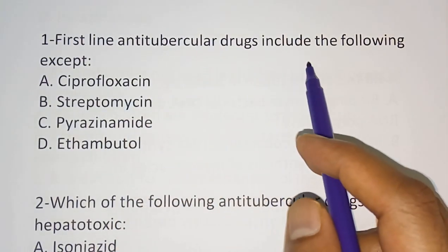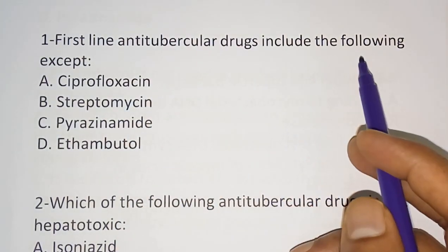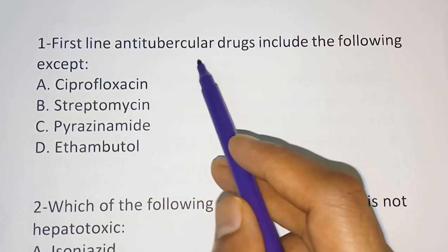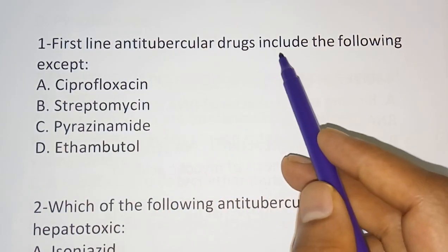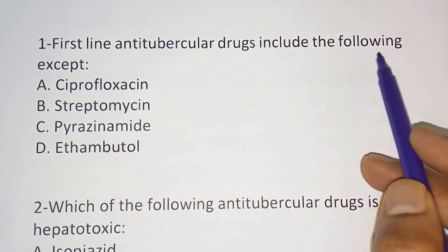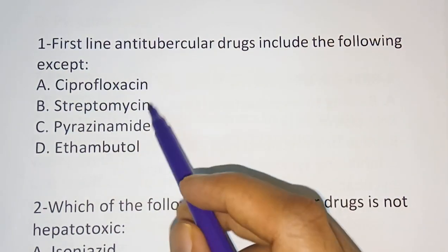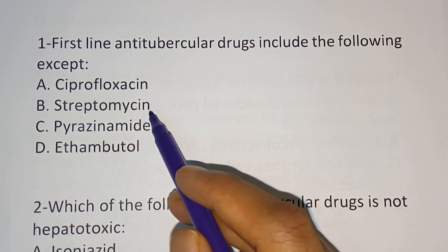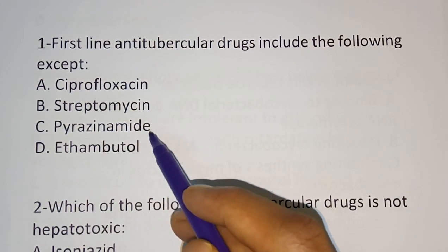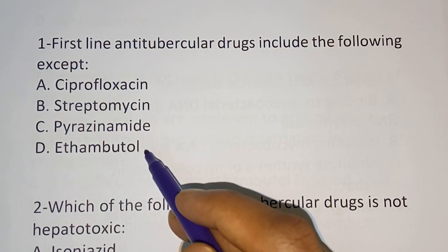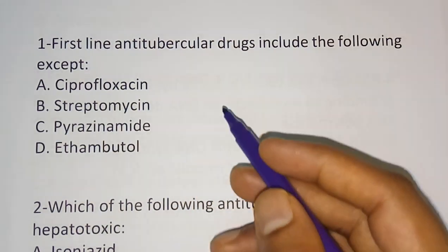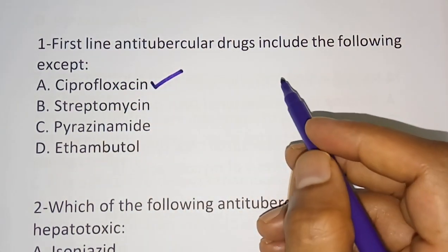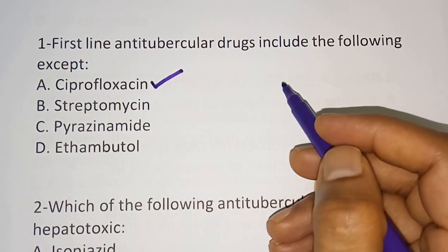The first-line anti-tubercular drugs include the following except — option A: ciprofloxacin, option B: streptomycin, option C: pyrazinamide, option D: ethambutol. The correct answer for this question is ciprofloxacin, which is not a first-line anti-TB drug.